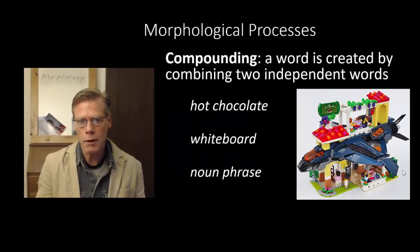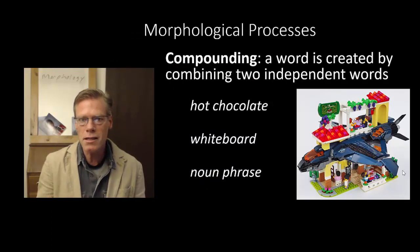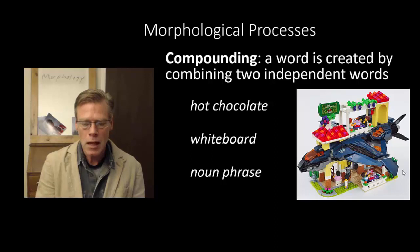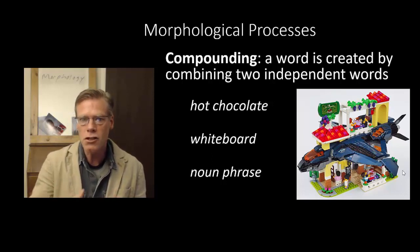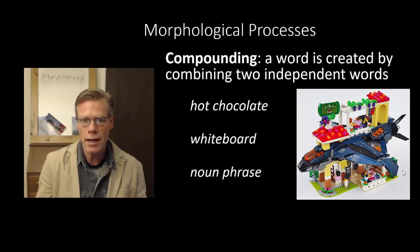Compounding is another common way of creating new words using morphology. In this case, we take two free morphemes — and remember, free morphemes are those that can stand alone, unlike an affix which needs to attach to a root. You take two free morphemes, squish them together, and you create a compound word.